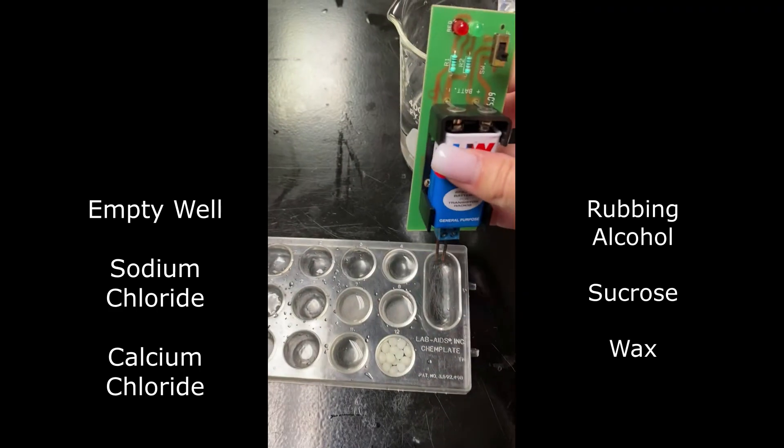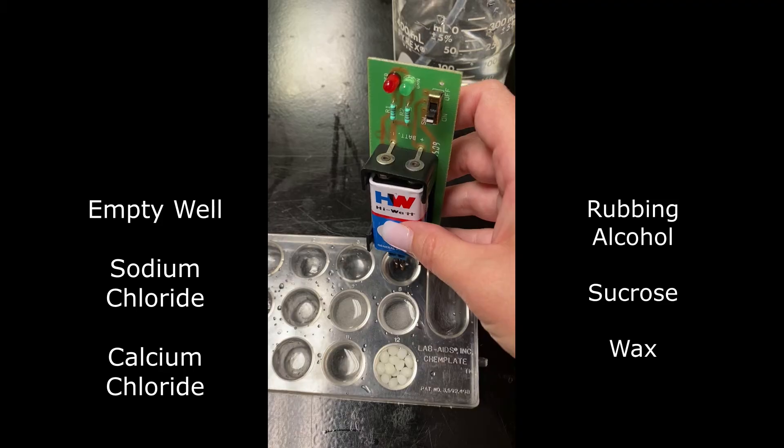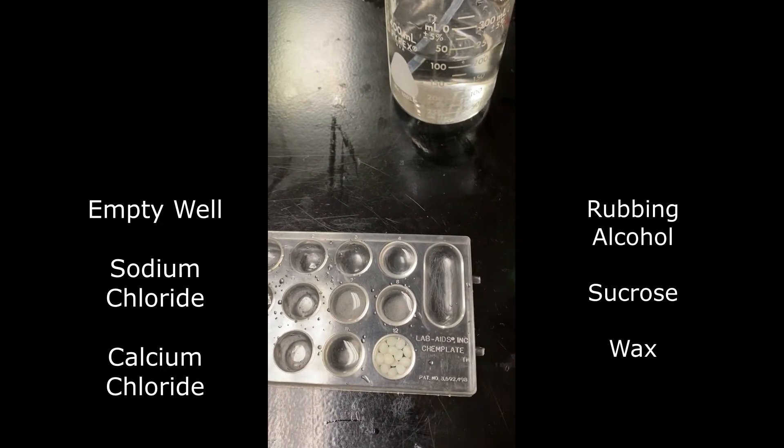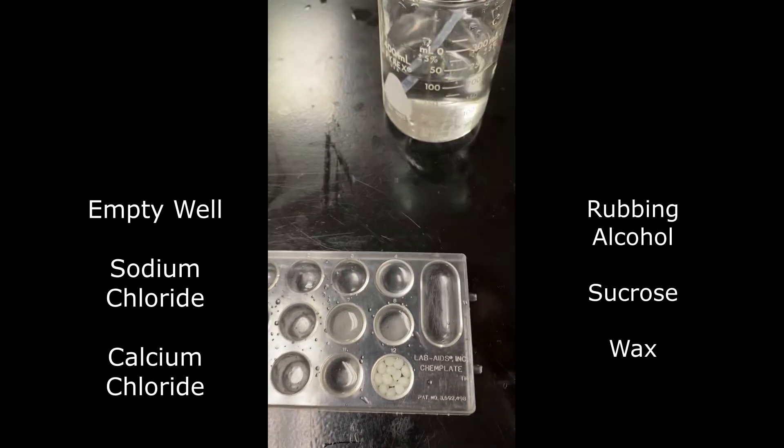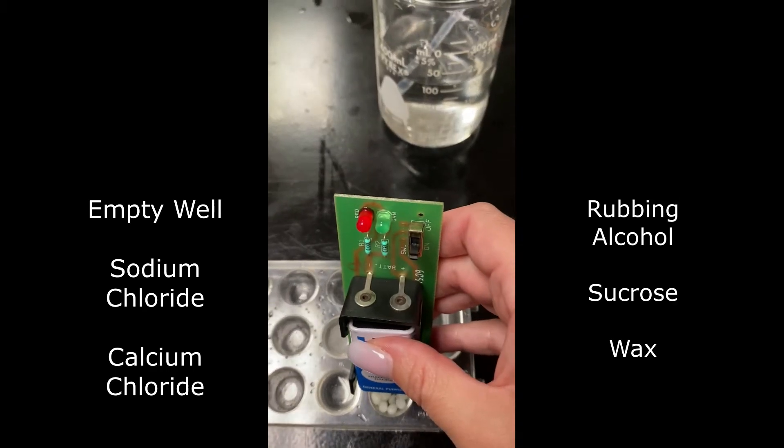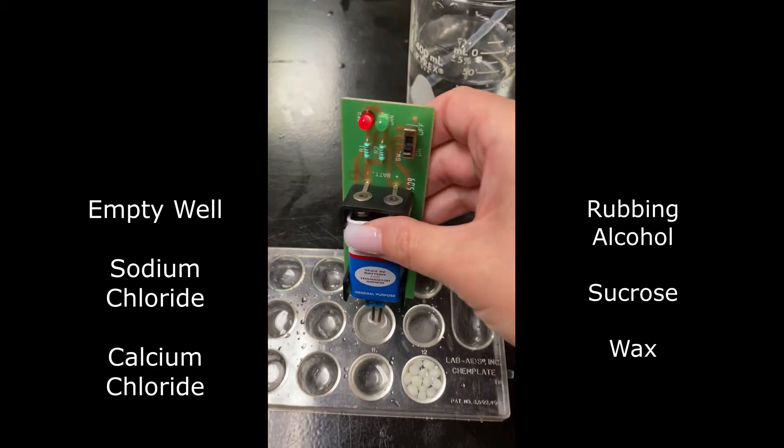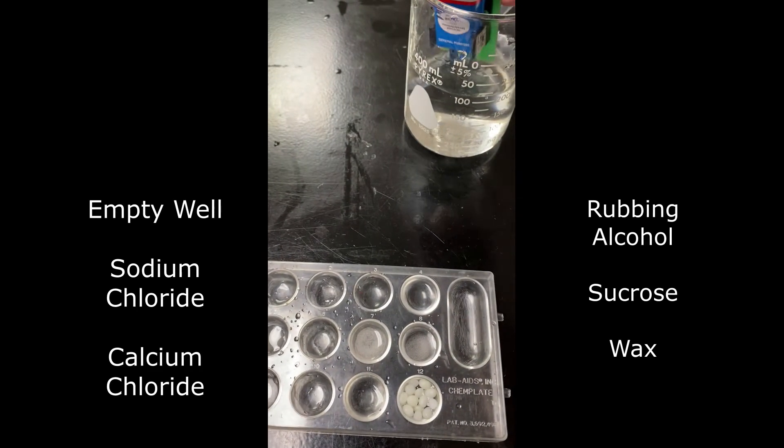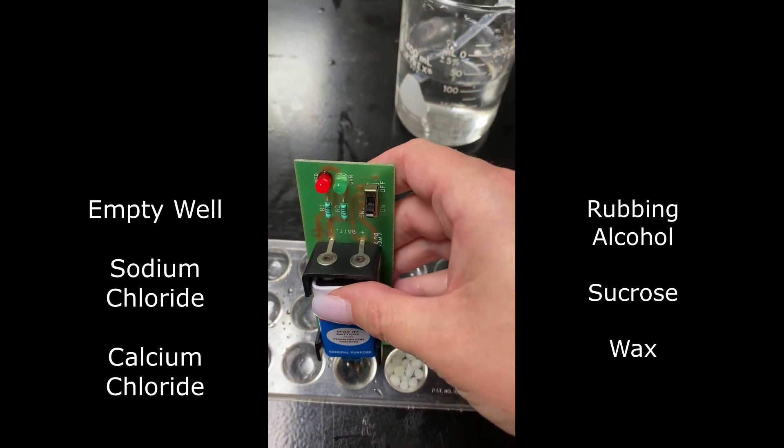We went ahead, turned on our conductivity meter. We're going to put it in our rubbing alcohol, which is just isopropyl alcohol. Make sure you always clean off your probe before you put it in the next chemical. And here's our sucrose. It did light up. That's most likely just from our tap water. Same thing with the wax and the water. It's most likely just from the tap water. And then our sodium chloride is very bright. And then our calcium chloride is the last. And again, it is very bright.